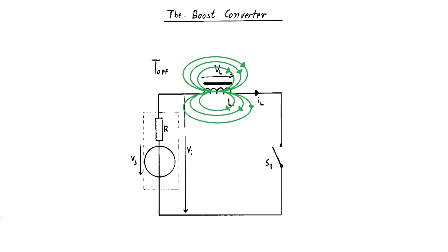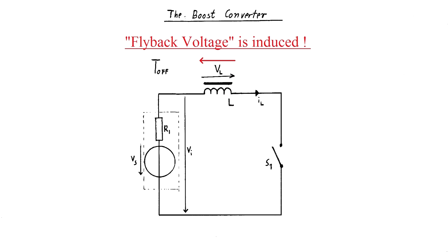The magnetic field caused by the rising of the current during the on period is now rapidly collapsing, inducing a very high voltage across the inductor. This voltage is reversed in polarity to the voltage across the coil during t on. This so-called flyback voltage can be so high that it can even create an electric arc across the switch.